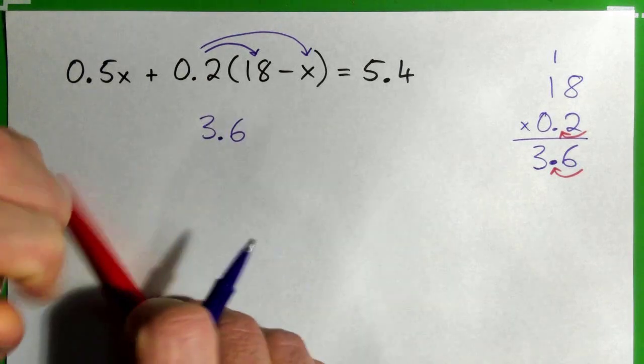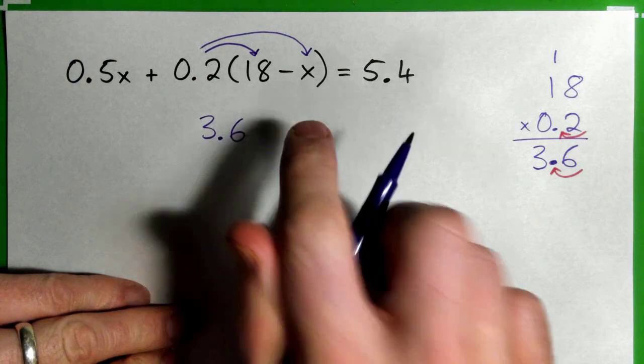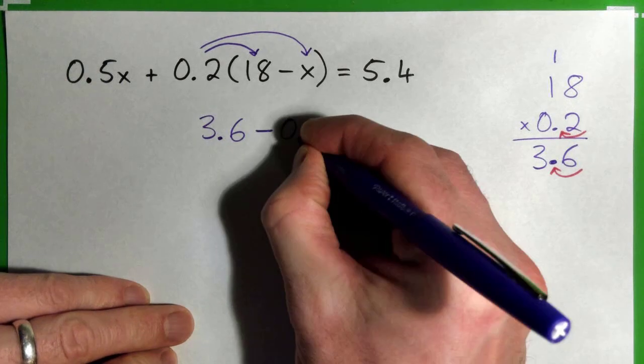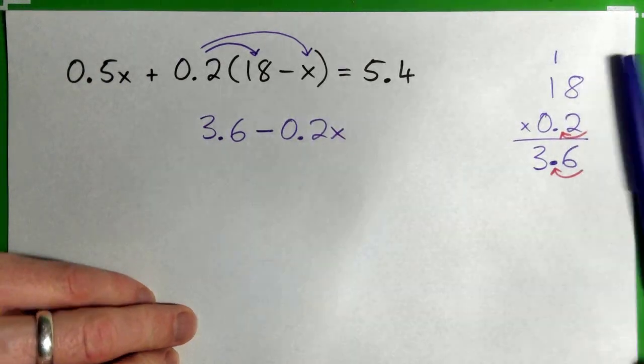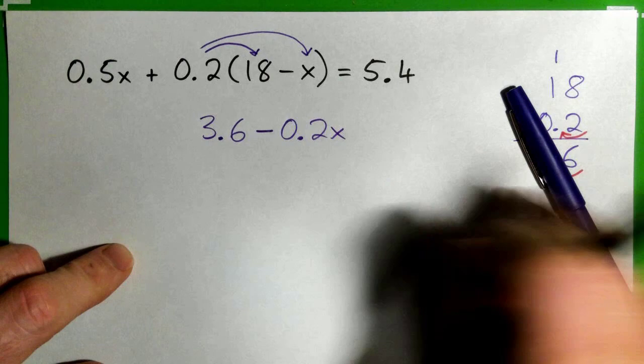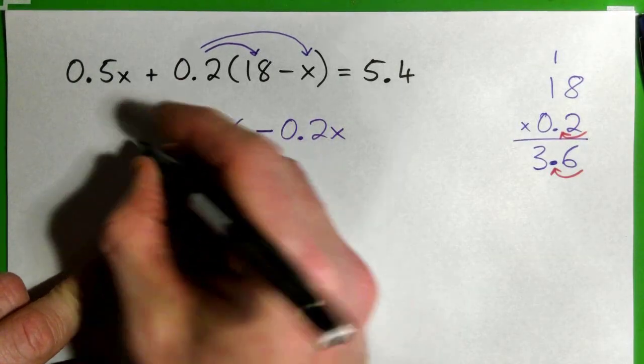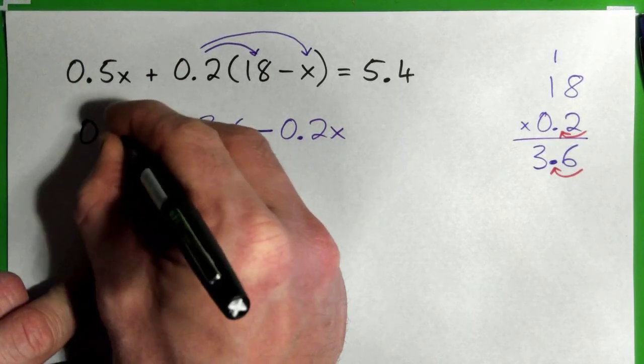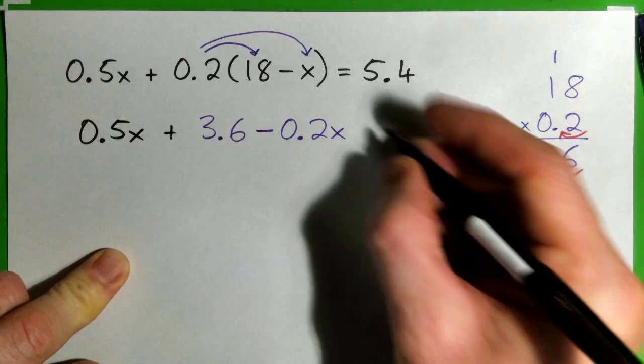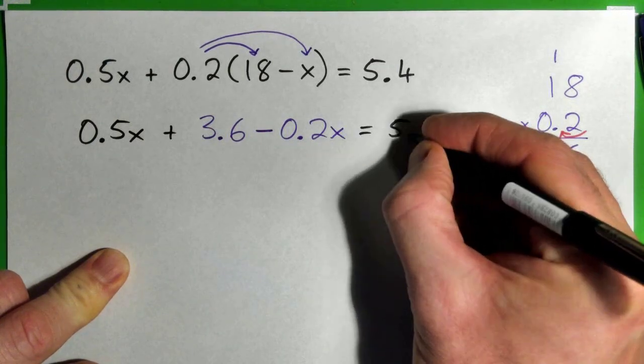Now 0.2 times negative x is negative 0.2x, okay? So that's the first step. And then we write everything else out. 0.5x plus that equals 5.4, okay?